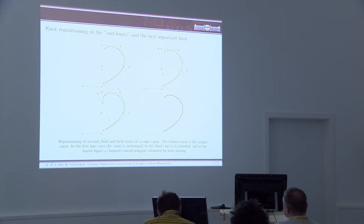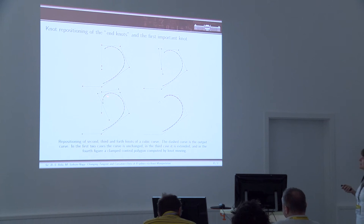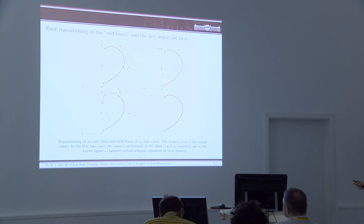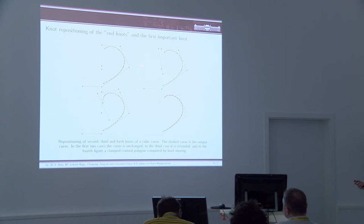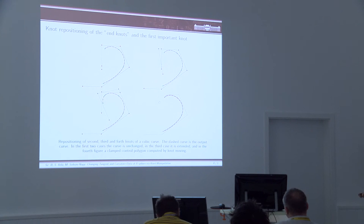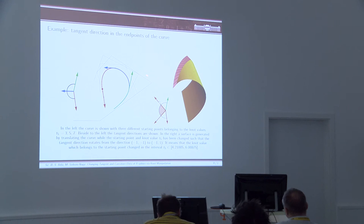Here you can see an application of this node repositioning at the end of the curve. If we reposition the second, third, and fourth nodes, we see how it changes. For the first important node repositioning, the curve doesn't change — only the control polygon does. But we can extend our curve or even gain a clamped control polygon if we reposition all the nodes into the first important node of the curve. With this technique, we can change or vary the tangent direction at the endpoint of the curve.